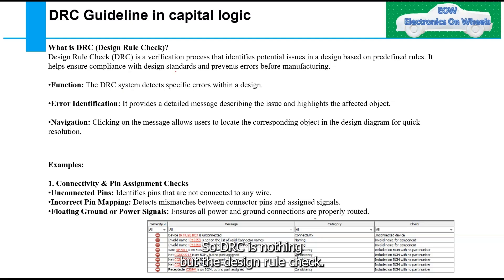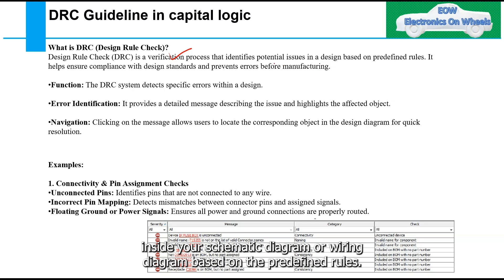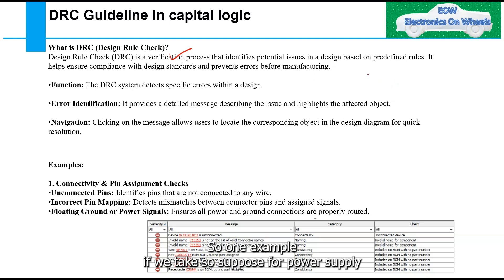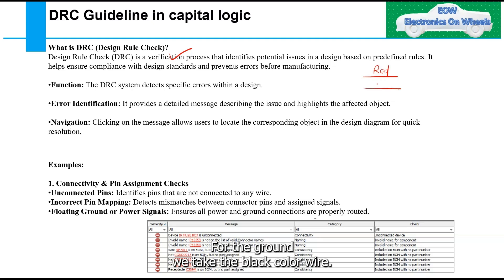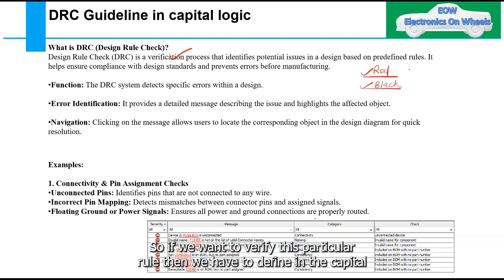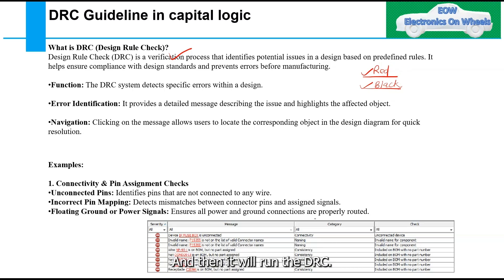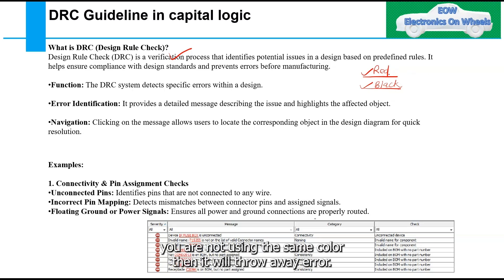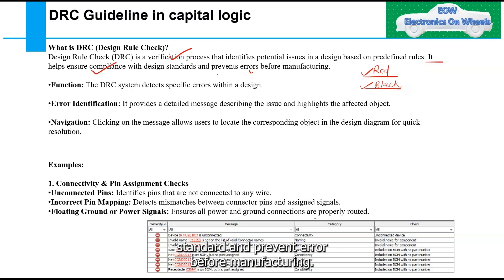DRC stands for Design Rule Check. It is a verification process that identifies potential issues inside your schematic diagram or wiring diagram based on predefined rules. For example, if we use a red color wire for power supply and black for ground, we can define this rule in Capital Logic and DRC will verify it — if you're not following it, it will throw an error.